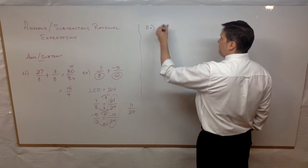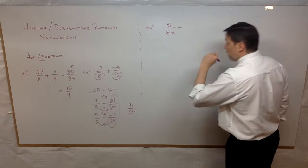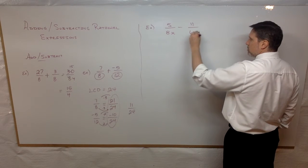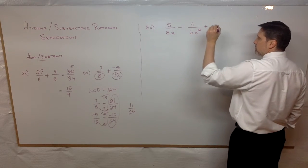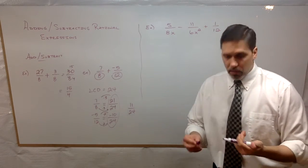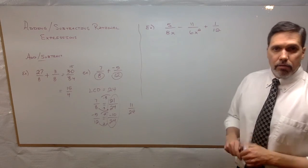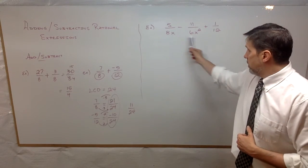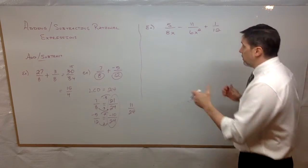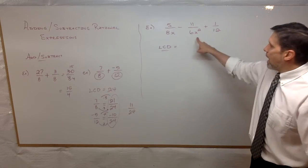Let me take an example. Say we have 5 over 8x, minus 11 over 6x squared, plus 1 over 12. A little bit more advanced, but the same concept — we're adding and subtracting three fractions here. First things first: notice your denominators are all different, so we're going to need a least common denominator. These are all monomials, which is very important.